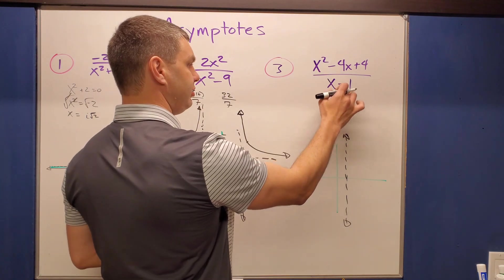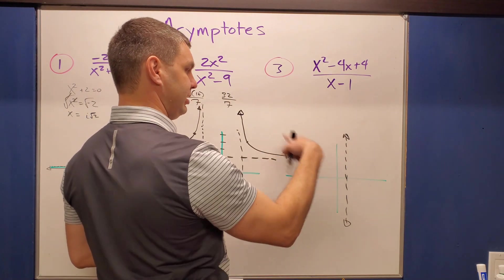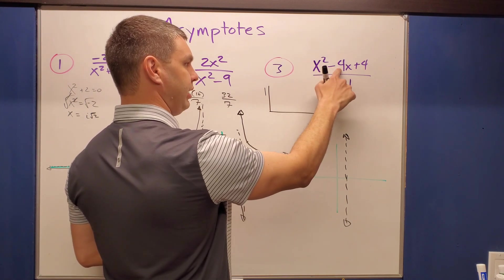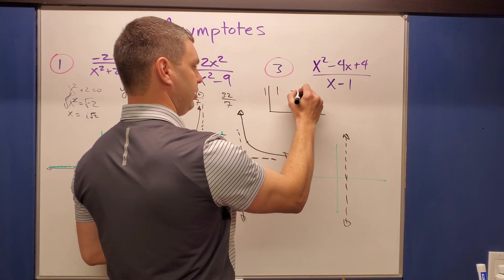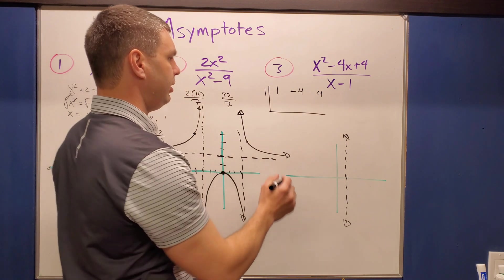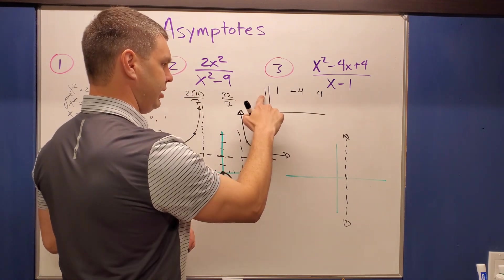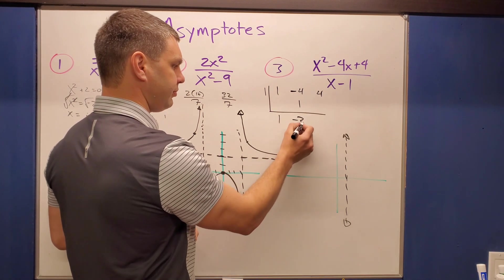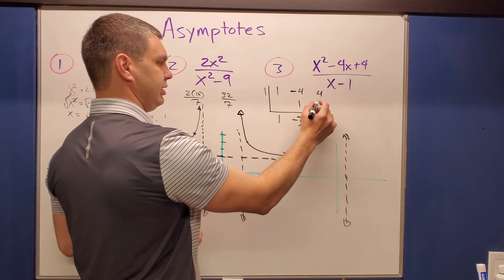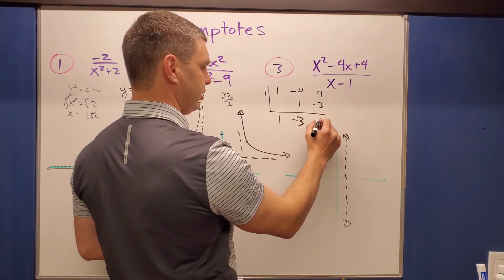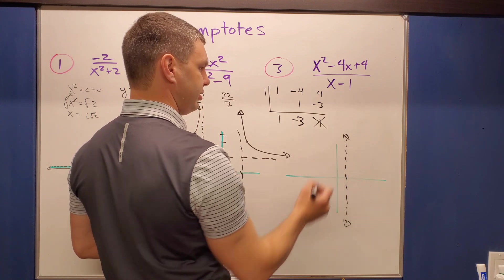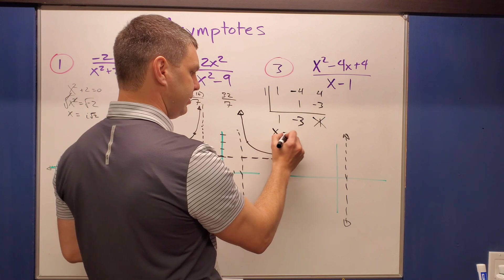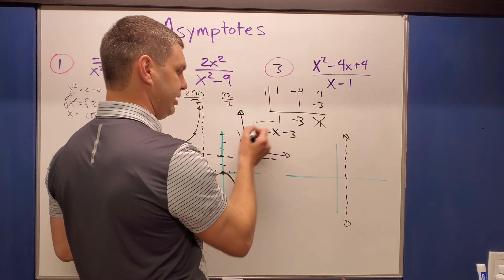Using synthetic division, we divide by one. Coefficients are one, negative four, and four. Bringing down: one times one is one; negative four plus one is negative three; negative three times one is negative three, and negative three plus four is one (the remainder). Discarding the remainder, the result is x minus three — so the slant asymptote is y equals x minus three.